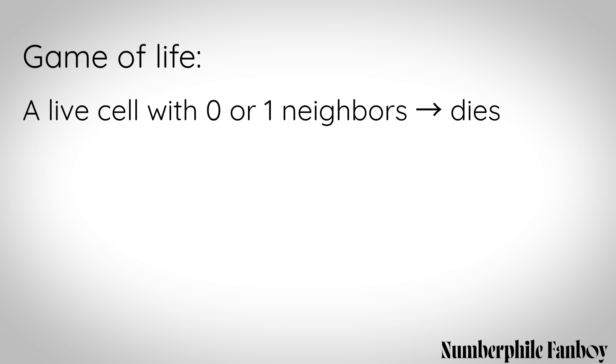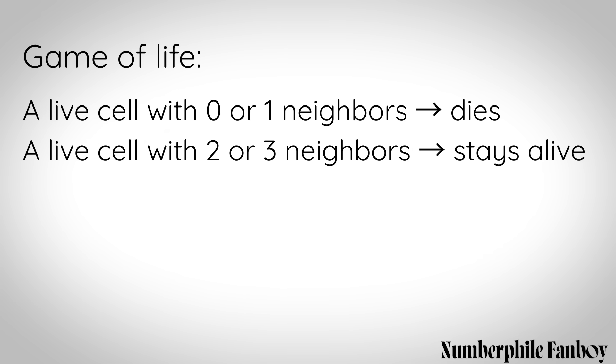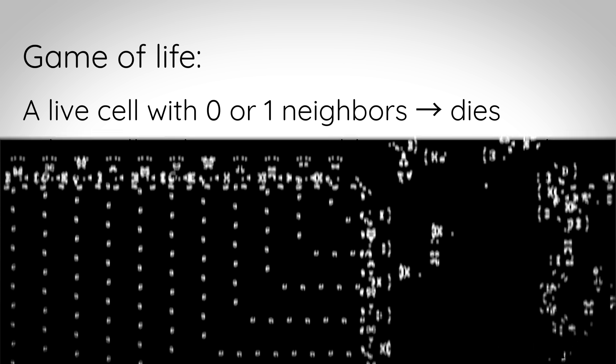The Game of Life is a simple game with an initial grid of dead or alive pixels and four rules: a live cell with zero or one neighbors dies; a live cell with two or three neighbors stays alive; a dead cell with exactly three neighbors becomes alive; and a live cell with four or more neighbors dies. This actually creates very complex structures, and some people have even made a Game of Life inside the Game of Life.